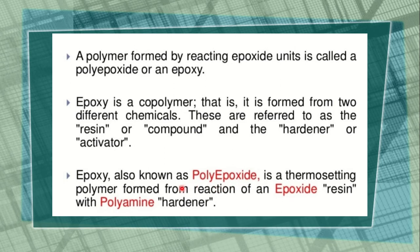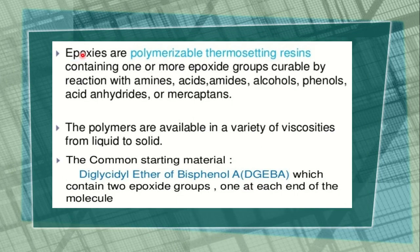Epoxy resin is a very important example of addition polymerization. Epoxides are polymerizable thermosetting resins containing one or more epoxide groups, curable by reaction with amines, acids, amides, alcohols, phenols, acid anhydrides, or mercaptans.